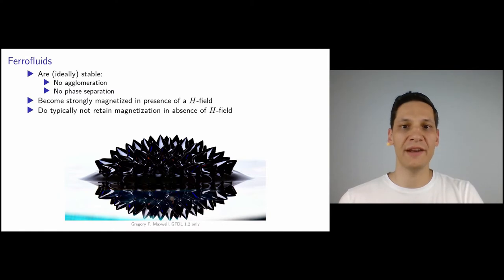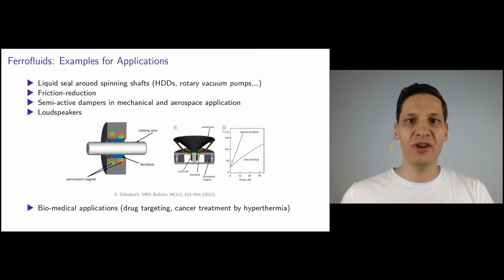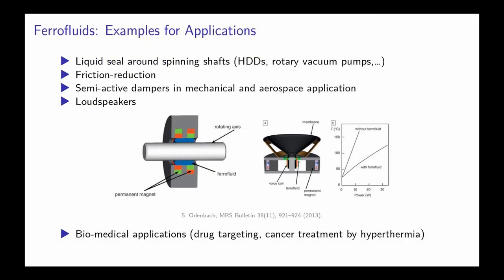While this might be aesthetically pleasing to some of you, ferrofluids do actually have real-world technical applications. A typical technical application of ferrofluids is their use as almost frictionless liquid seals for rotary feed-throughs, as they can be found for example in hard drive discs or rotary vacuum pumps. A visualization of such a liquid seal is shown in the left-hand side picture. The ferrofluid is held in place by permanent magnets, effectively reducing the friction with the spinning shaft and at the same time sealing off the left and right-hand side of the feed-through.